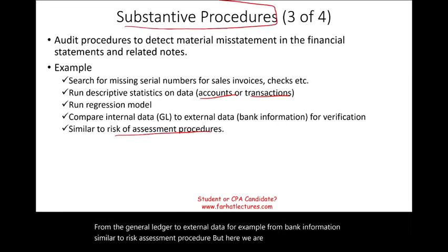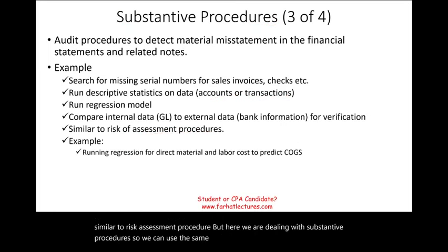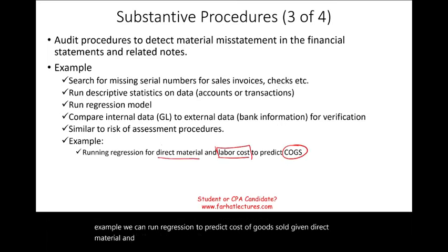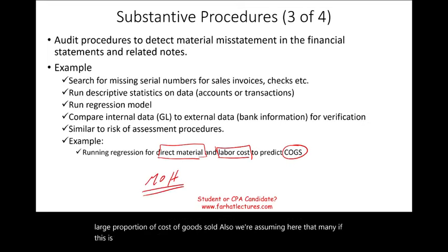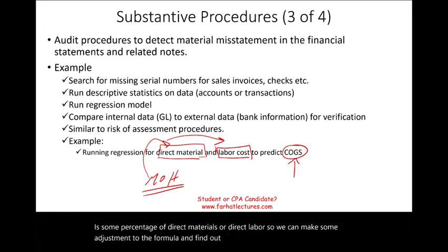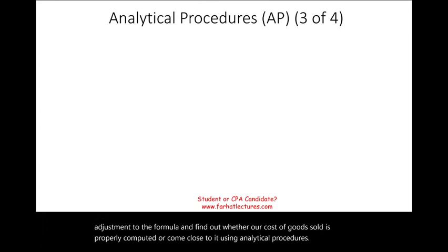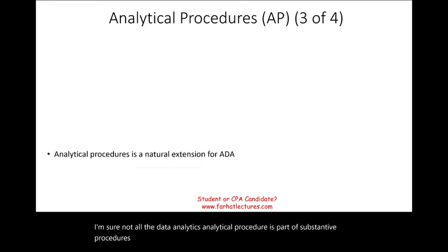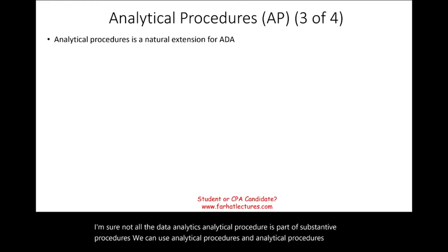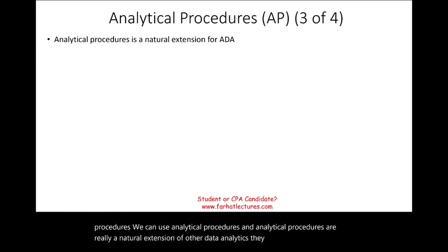Similar to risk assessment procedures, but here we are dealing with substantive procedures, so we can use the same techniques. For example, we can run a regression to predict cost of goods sold given direct material and direct labor — assuming those are a large proportion of COGS and that manufacturing overhead is some percentage of direct material or direct labor. We can adjust the formula to find out whether our cost of goods sold is properly computed using analytical procedures. Analytical procedures are really a natural extension of audit data analytics — they work hand in hand.